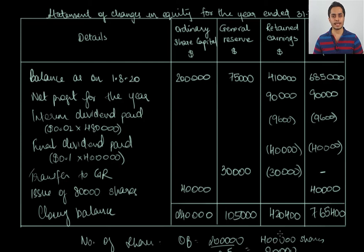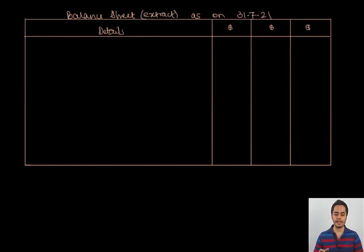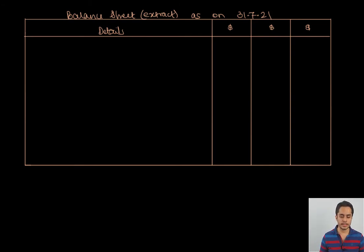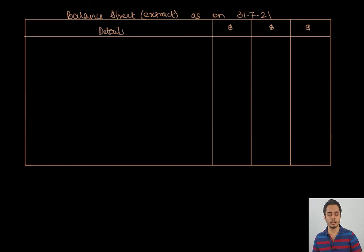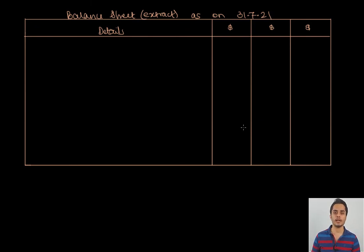Let's go ahead and prepare the balance sheet extract as required by the question. We will directly begin with the presentation of equity and then non-current liabilities — no other elements of the balance sheet will be presented here. Under the equity section, we write out the various components: ordinary share capital at $0.5 per share is $240,000, as calculated in the closing balances. General reserve is $105,000 and retained earnings is $420,400.